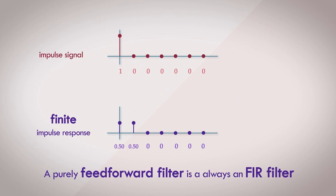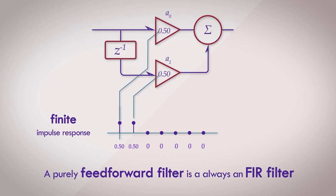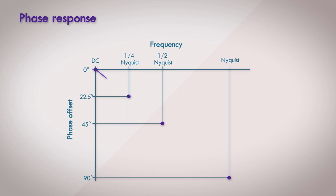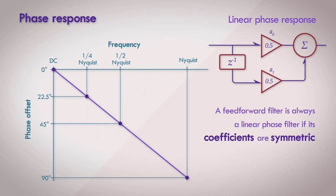We'll look at why this filter is called a finite impulse response filter, or an FIR filter, and how FIR filters can maintain linear phase characteristics.